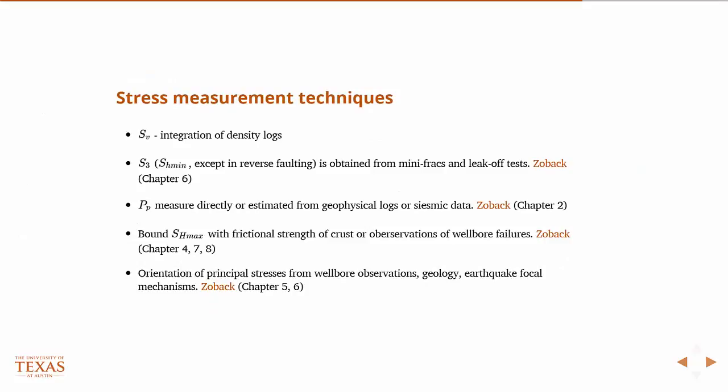So, how do we measure these stresses? This is just an overview — later in the class we'll get into more details. The vertical stress is typically obtained through integration of density logs, which is what we already showed. The minimum principal stress, which is SH min except in reverse faulting scenarios, is obtained from mini-fracs or leak-off tests. These are tests where we produce a hydraulic fracture and, looking at the pressure logs from the well as the pressure decays, we can infer information about the stress state.